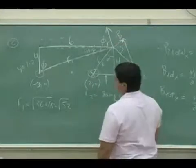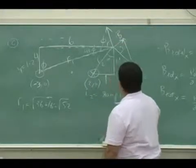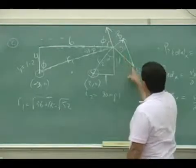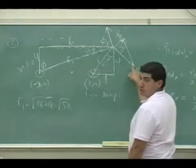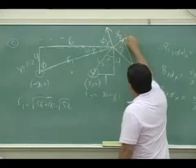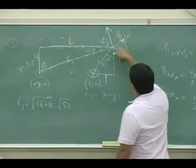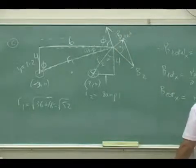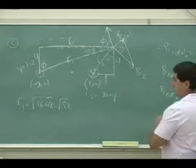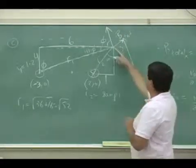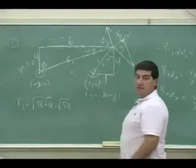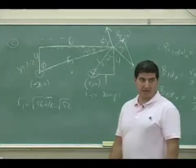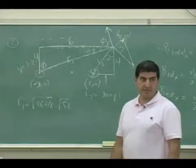You see? It just so happens that this one's big enough so when you put it to the tip of that, the B total ends up with a positive X component and a positive Y component, and it's in the first quadrant — the magnetic field created by that.